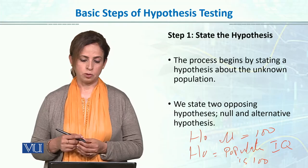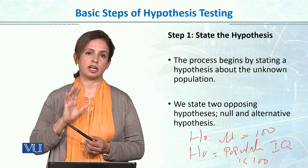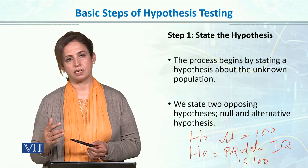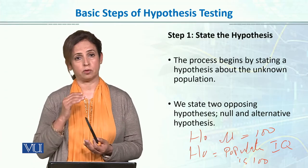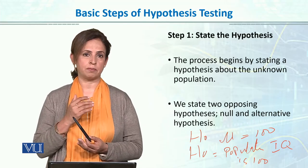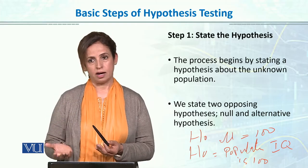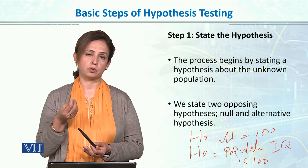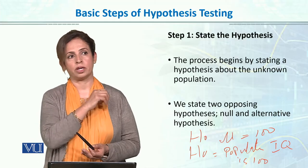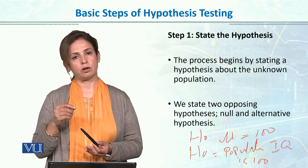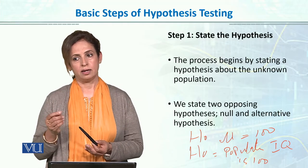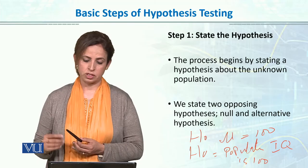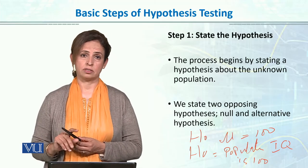The first step is that you just state the hypothesis, and there are two opposing statements. Statistics helps you objectify your procedure — it makes you more objective. You don't make subjective decisions. You very scientifically make an assumption, then build a counter assumption, and then you test it using statistical tests. Objectively, on the basis of that value, we draw conclusions about the population. We state two opposing hypotheses: null hypothesis and alternative hypothesis.